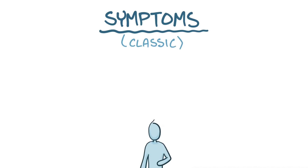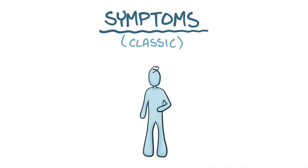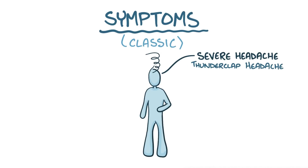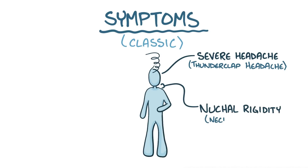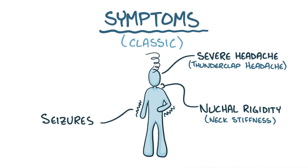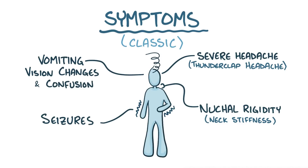The classic symptom of a subarachnoid hemorrhage is the sudden onset of a severe headache, called a thunderclap headache. It's often described as the worst headache a person has ever had. There's also something called nuchal rigidity, or neck stiffness, which is caused by the blood irritating the meninges. Occasionally, people can develop seizures and symptoms of increased intracranial pressure, like vomiting, vision changes, and general confusion.